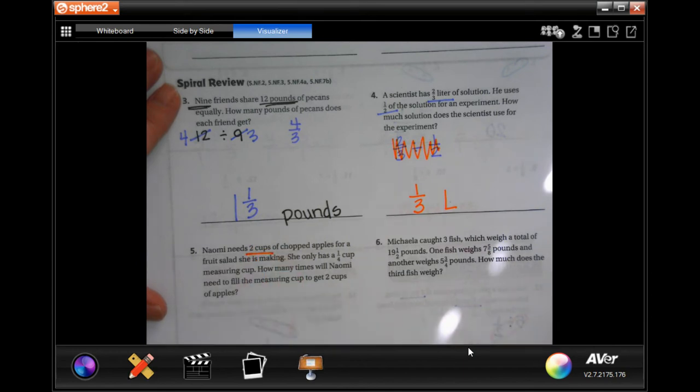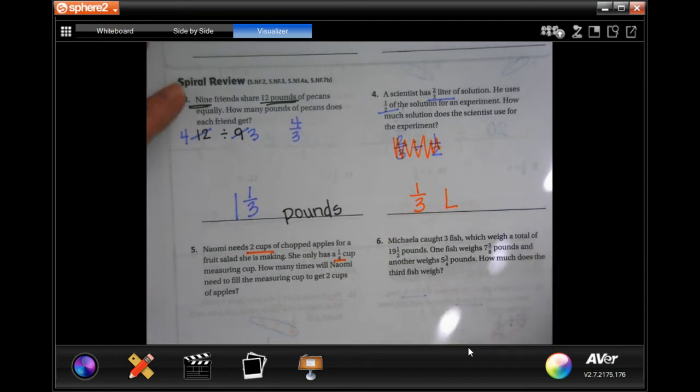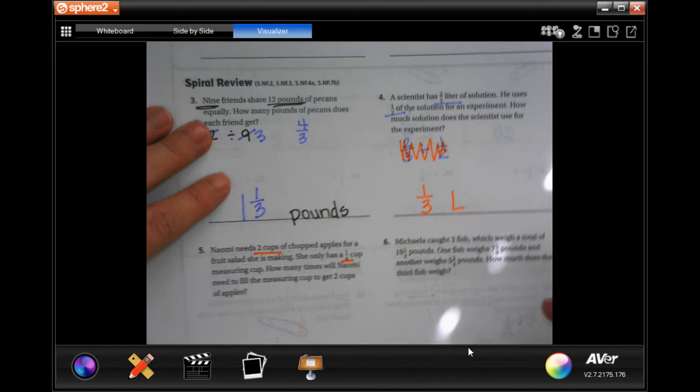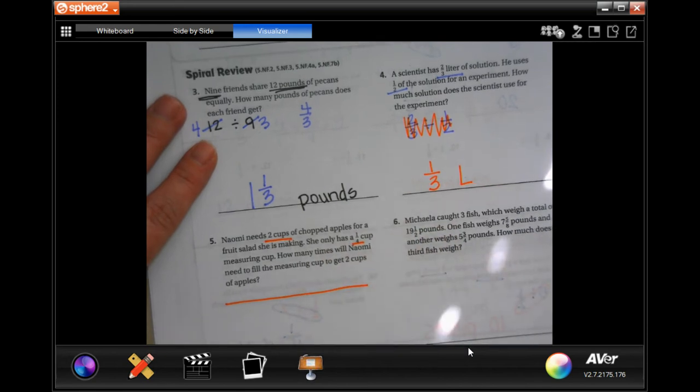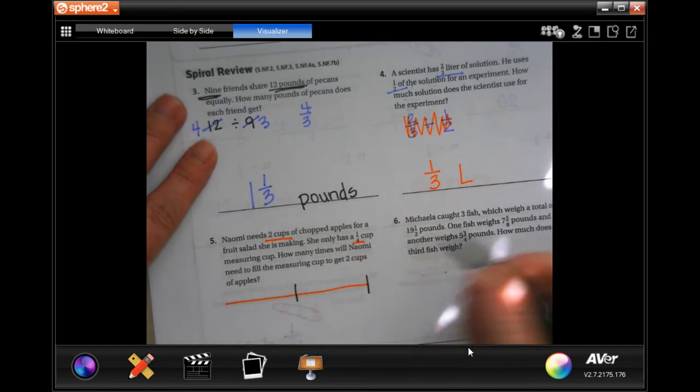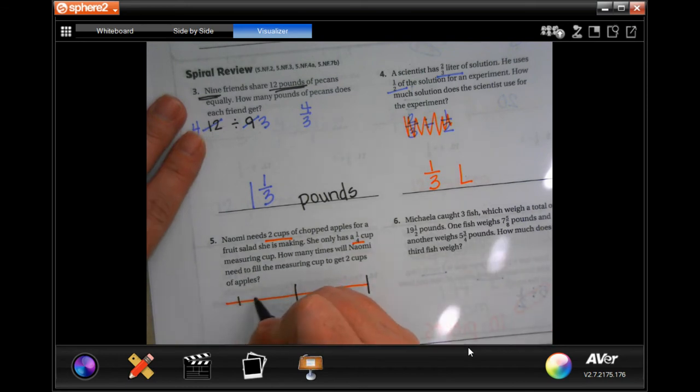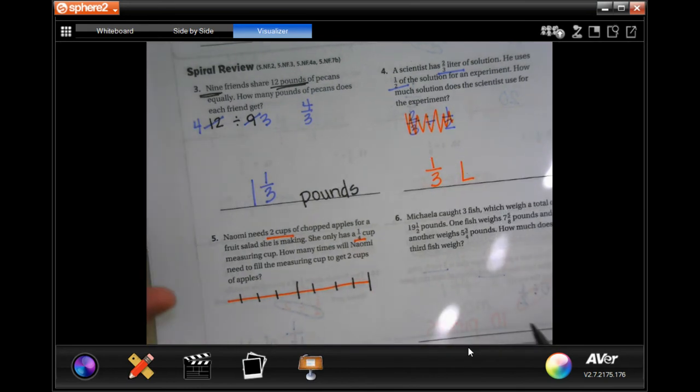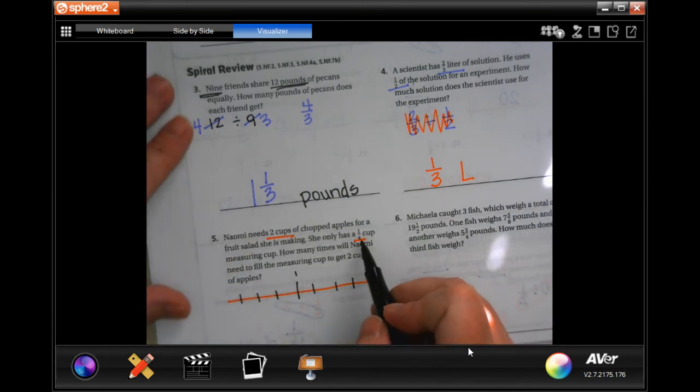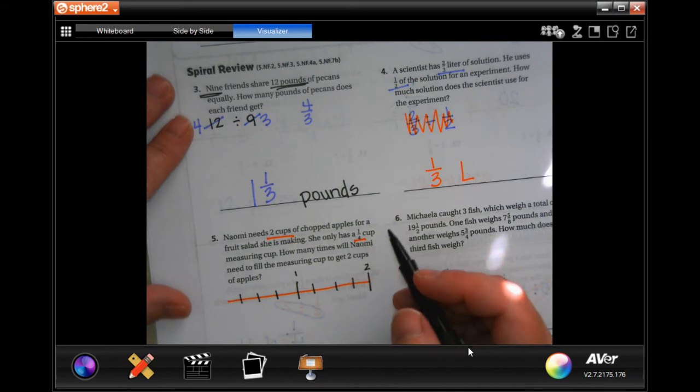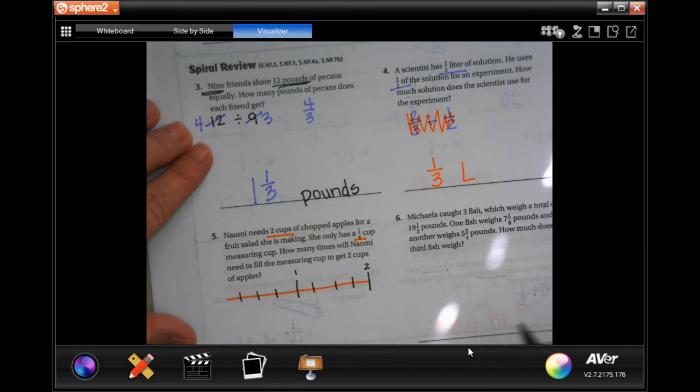Naomi needs 2 cups of chopped apples for a fruit salad she's making. She only has a quarter cup measuring cup. How many times will Naomi need to fill the measuring cup to get to 2 cups? So, just so that we're clear. There's 1 cup. There's 2 cups. There's 1 quarter. We split each one up into 4. Because she has 2 cups. So, there's 1 and there's 2. But she's splitting them up by 4. So, yes, we can just do 2 divided by 1/4.